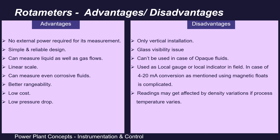Talking about advantages: first, it needs no external power for its working, unlike other flow meters. Second, it has a very simple and reliable design. It can measure liquids as well as gas flows. Its scale is approximately linear. It can measure even corrosive fluids. It also has better rangeability, low cost, and low pressure drop.